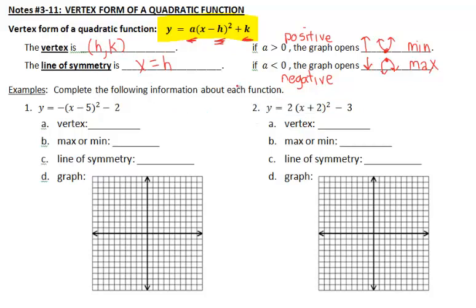So complete the following information about each function. So on this first example here, the vertex, remember you're going to take the opposite of whatever value is in here, so instead of negative 5, we're going to write 5, and we're going to keep this value exactly as we see it, negative 2, so that's our vertex.